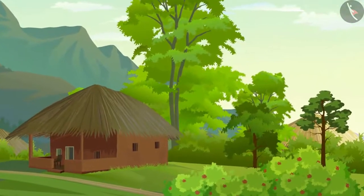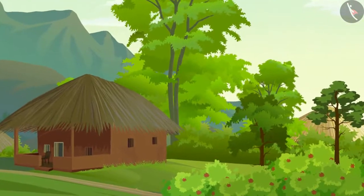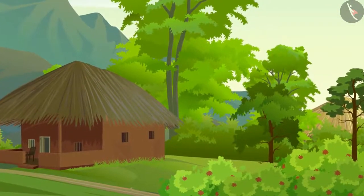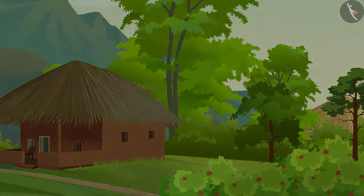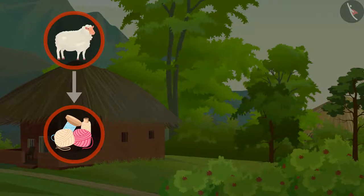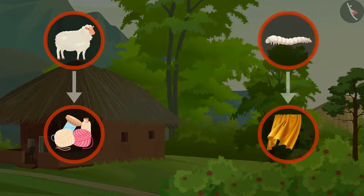Friends, isn't it so cold? You should also wear something warm. I'm sure you all know which animal's hair is used to make woolen clothes. Do you know which is the softest and shiniest fabric? Correct — silk! Did you know that silk is also an animal fabric? Let us look for these answers through the help of this video.